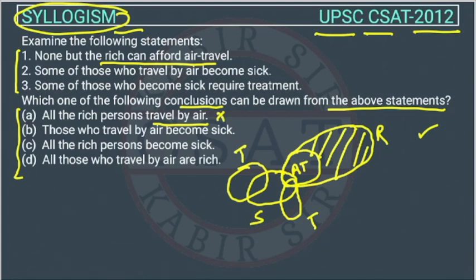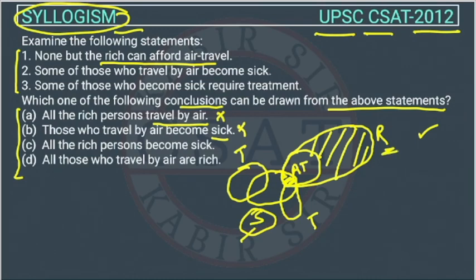Conclusion B: those who travel by air become sick. Only some of those traveling by air are becoming sick, not all — because the sick Venn diagram only partially overlaps. So this is also wrong. Conclusion C: all the rich persons become sick. This is not possible because only a few are becoming sick — those who travel by air. So not all rich become sick. This conclusion is also wrong.